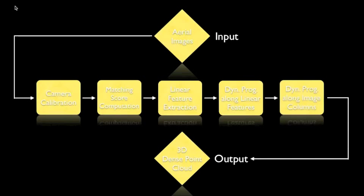The second-pass dynamic programming is performed along aligned image columns, taking into account the bias terms from the first pass and produces a dense 3D point cloud as the output.